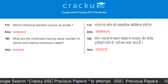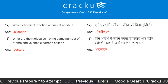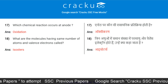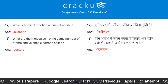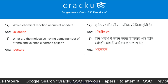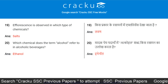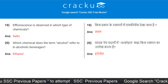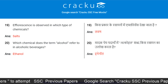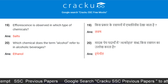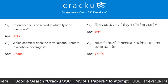Which chemical reaction occurs at the anode? Oxidation. What are the molecules having the same number of atoms and valence electrons called? Isoelectronic. Efflorescence is absorbed in which type of chemicals? Salts. Which chemical does the term alcohol refer to in alcoholic beverages? Ethanol.